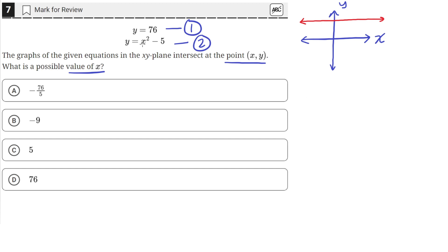And then the graph y equals x squared minus 5 is just a parabola that is concave up, since the coefficient of x squared is positive. So it'll look something like this. Its origin, the vertex of this quadratic, is not at the origin since it's shifted down by 5 units, so it'll be somewhere down here.